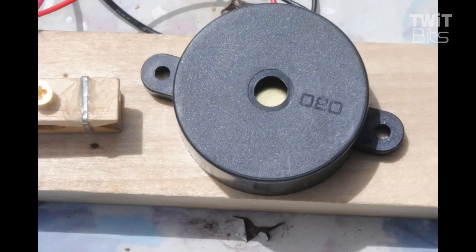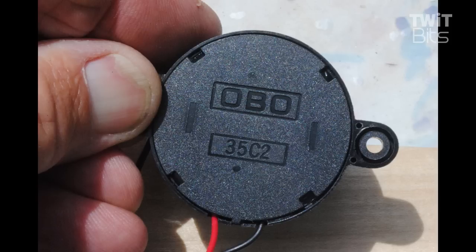So, can the buzzer and go for the piezoelectric. Hear how sharp that is? The buzzer will develop bad habits. And the little piezo comes from OBO, and it's model 35 Charlie 2.